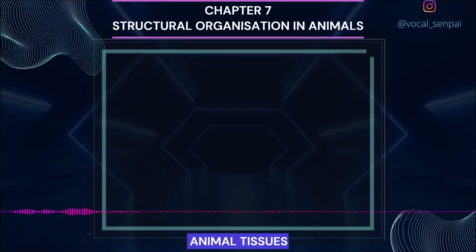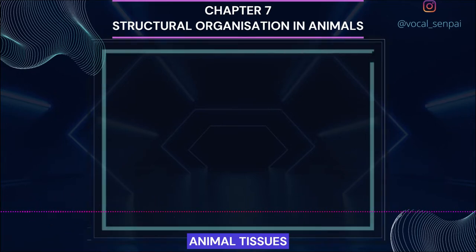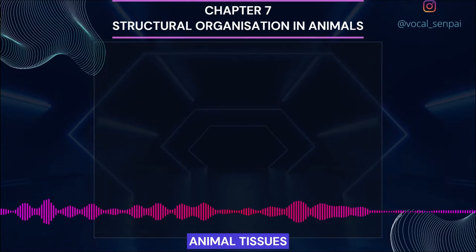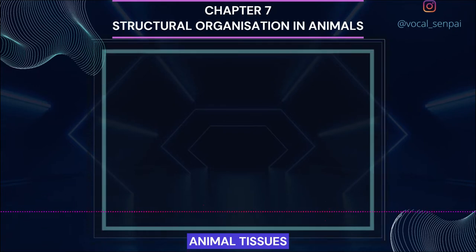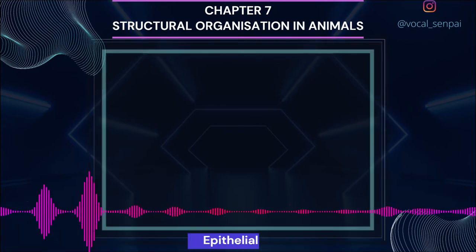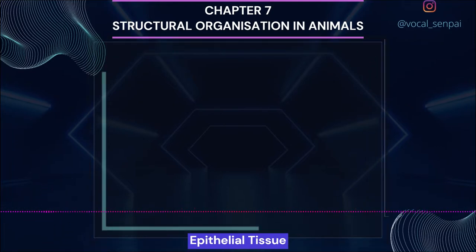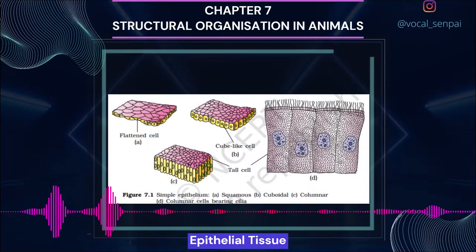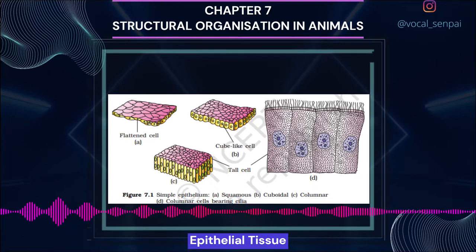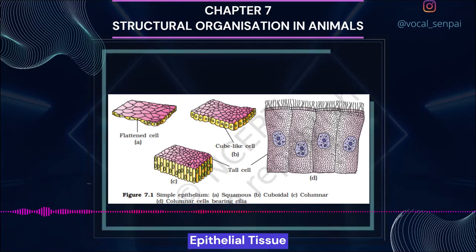Animal Tissues. The structure of cells varies according to their function; therefore, tissues are broadly classified into four types: 1. Epithelial, 2. Connective, 3. Muscular and 4. Neural. Epithelial tissue, commonly referred to as epithelium (plural: epithelia), has a free surface which faces either a body fluid or the outside environment, thus providing a covering or lining for some part of the body.